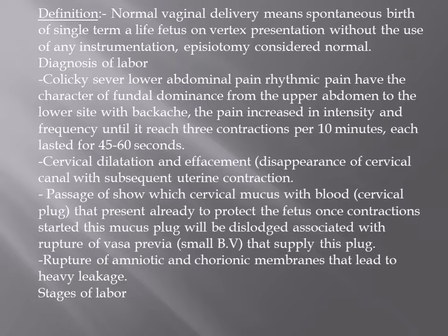Until it reaches three contractions per 10 minutes, each contraction lasting 45 to 60 seconds, associated with cervical dilatation. These contractions increase in intensity — from weak they become strong — and if they were far apart they become closer together, until we reach three contractions per 10 minutes lasting 45 to 60 seconds. At that point we call it efficient uterine contraction, or signs of labor.